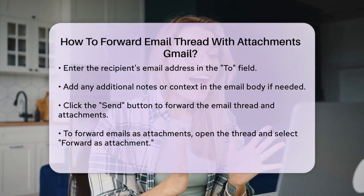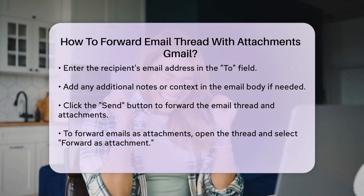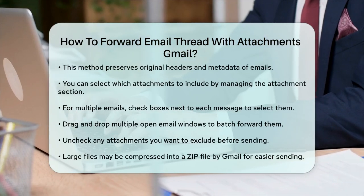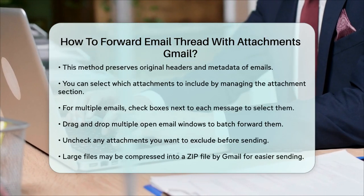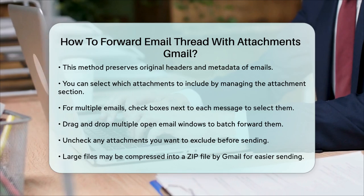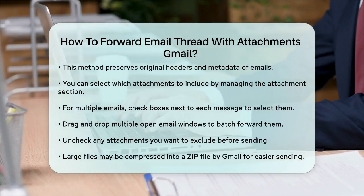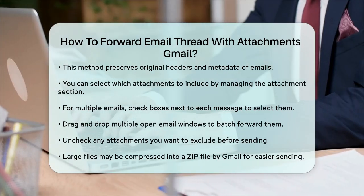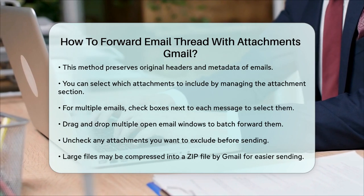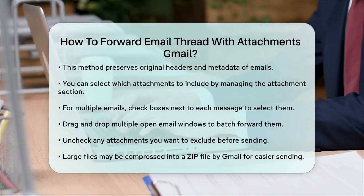You can then select which attachments to include or exclude by expanding the Attachments section and unchecking any files you don't want to send. When forwarding multiple emails as attachments, you can select multiple messages by checking the boxes next to each email on the desktop, or by long pressing on emails on your Android or iPhone. You can also drag and drop multiple open email windows into a new compose window to batch forward them.